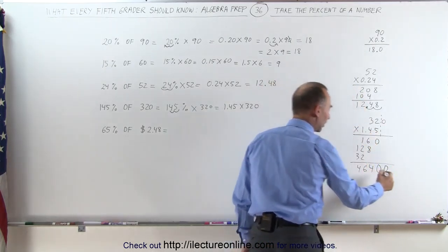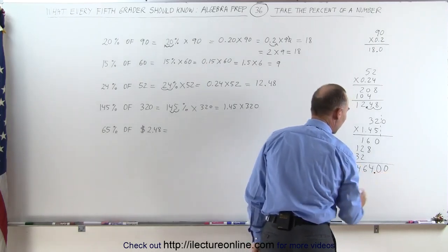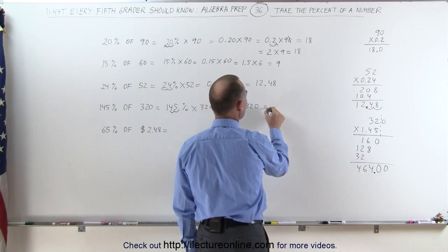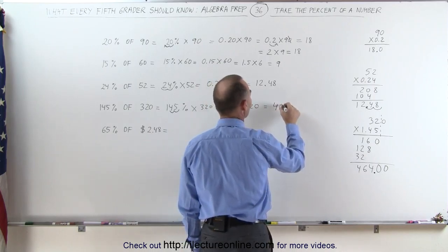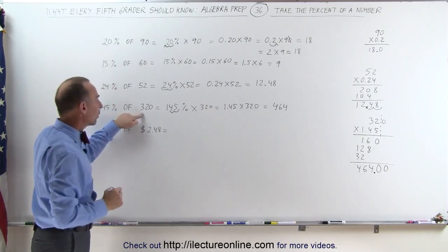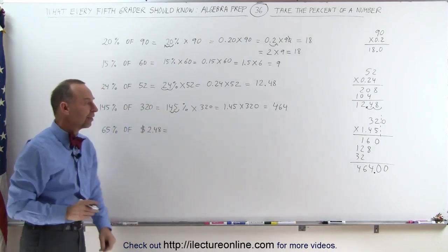Don't forget that zero right there. I still have two decimal places, so I need to put a decimal point right there, which means that 1.45 times 320 is equal to 464, which means 145% of 320 is 464.